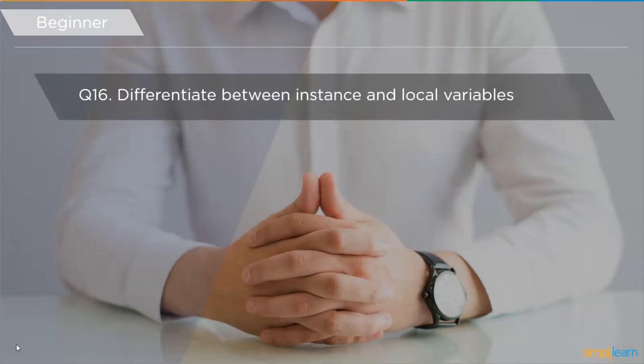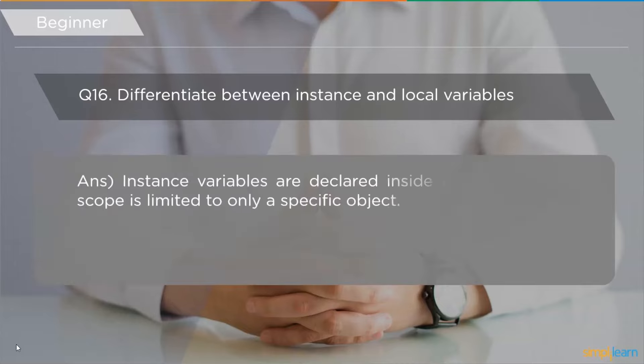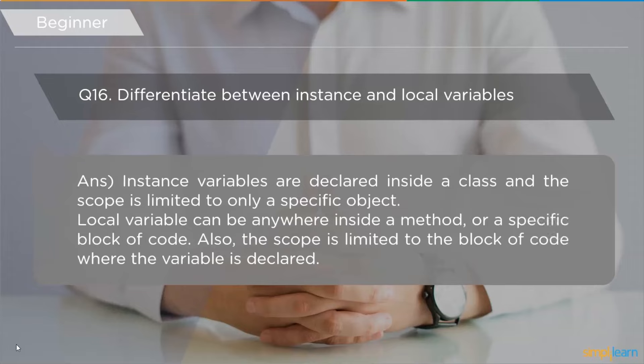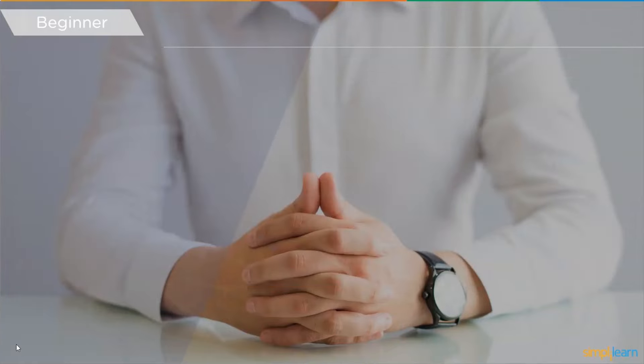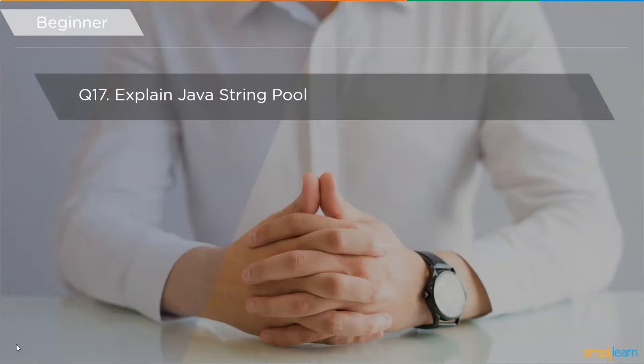The next question is: differentiate between instance and local variables. Instance variables are declared inside a class and their scope is limited to a specific object. Local variables can be anywhere inside a method or a specific block of code, and their scope is limited to the block of code where the local variable is declared.